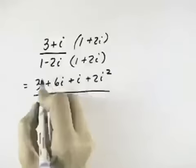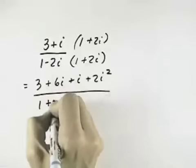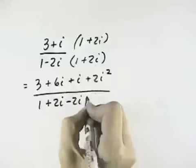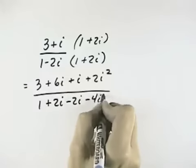In the denominator, 1 times 1 is 1, 1 times 2i is plus 2i, minus 2i times 1 is minus 2i, minus 2i times plus 2i is negative 4i squared.